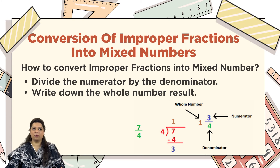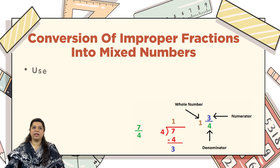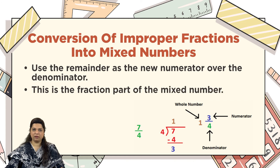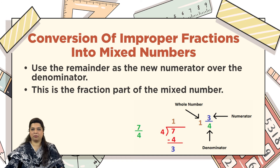4 goes into 7 one time — 4 times 1 is 4 — and the remainder is 3. Step 2: write down the whole number result. The quotient becomes your whole number part. Step 3: the remainder becomes your new numerator. So the remainder 3 becomes the numerator of the fraction part, and the denominator always remains the same — it was 4 in the improper fraction and stays 4 in the mixed number.